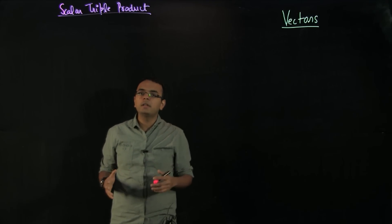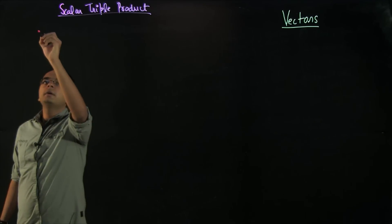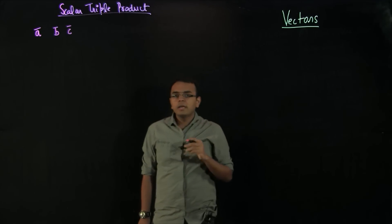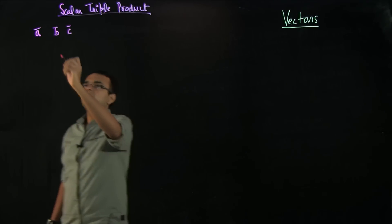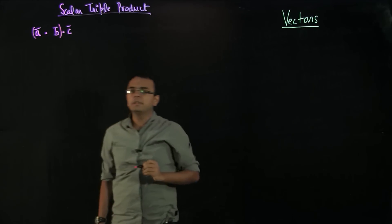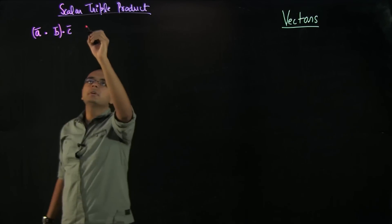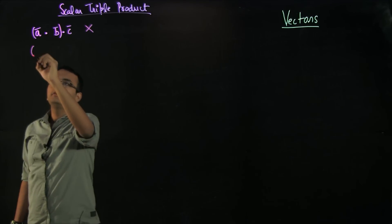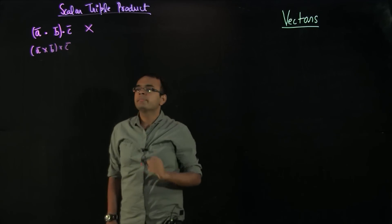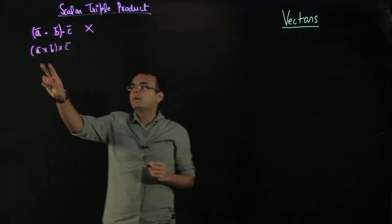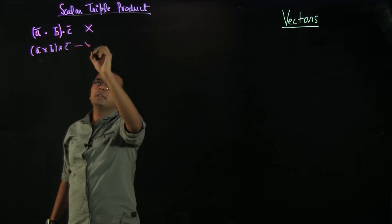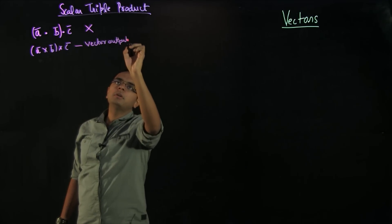How can we get a scalar quantity out of three vectors? Can we do A·B·C? If we do this, A·B is a scalar quantity and we cannot dot it with C — so this is not possible. Can we do A×B×C? This would mean A×B is a vector, and then taking vector cross another vector gives a vector output. But we want a scalar output, so this is also not possible.